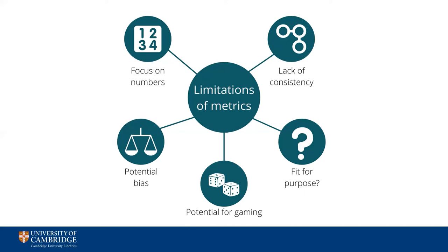And finally, some metrics like the h-index take into account the publication record of a researcher over time. This often unfairly promotes older researchers who've had more time to build up publications and become established. These biases show the importance of adding context to your metrics so that people can make informed judgments on your record and potential impact.